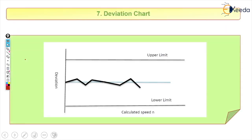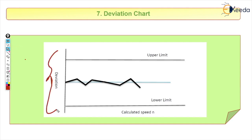Next is the deviation chart. In the deviation chart, whatever deviation exists in terms of depth is drawn. It has a mean line or midline, a lower limit, and an upper limit. Between these limits, a line is drawn to show whether there is a deviation or not. All these parts will be seen in detail during numerical problems.